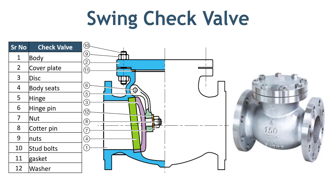Check valves are used to prevent backflow in the pipeline. The name suggests that it checks something. The function of the check valve is to ensure that there will be no reverse flow in the pipeline. Now you must be thinking about how reverse flow is possible in the pipeline.